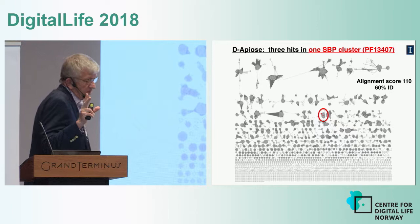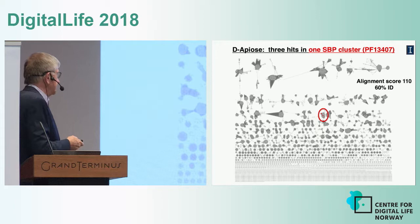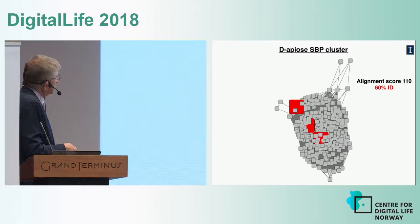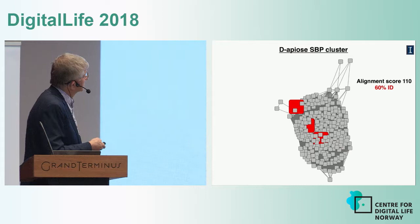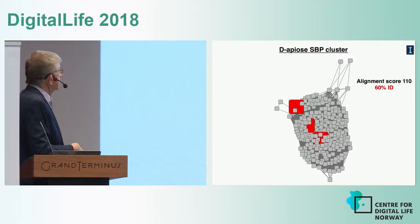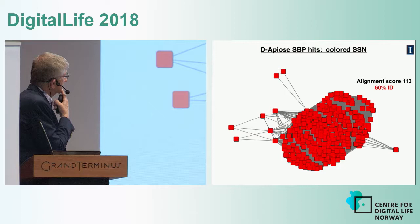D-apiose has been known, but there had never been a catabolic pathway described for it. We discovered five pathways — which amazed us — and I want to tell you today about four of them. Here is the sequence similarity network for PFAM13407, the solute binding protein family containing the three solute binding proteins that bind D-apiose. This network was constructed at about 60% sequence identity, so these solute binding proteins appear to be orthologous.